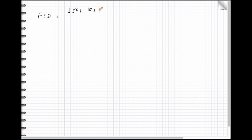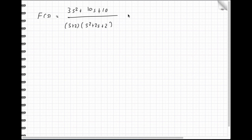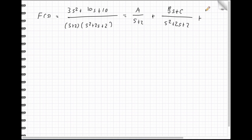Continuing with this example: F(S) equals (3S²+10S+10) all over (S³+4S²+6S+4), which I'll rewrite as (S+2)(S²+2S+2). These are the two complex conjugate factors — I can't factor further without getting complex. So that equals A/(S+2) plus (BS+C)/(S²+2S+2). If I had another complex conjugate pair, I'd just add (DS+E) over that pair. You keep repeating for however many distinct complex conjugate pairs you have.